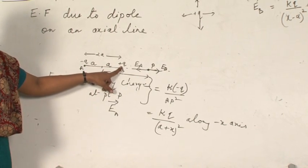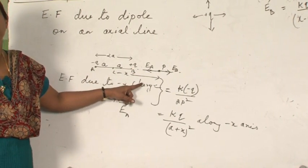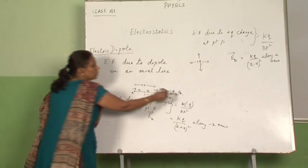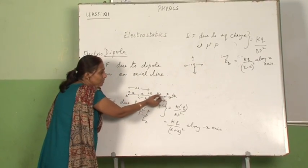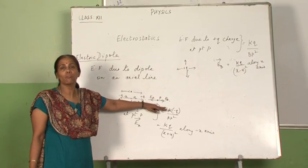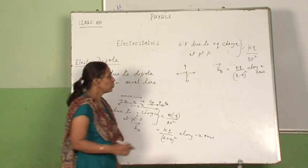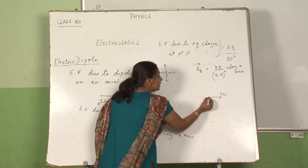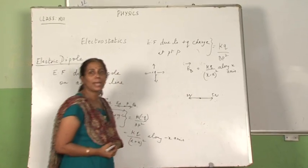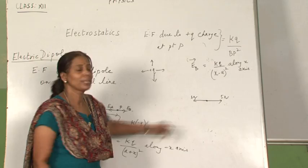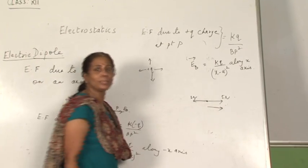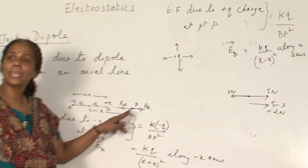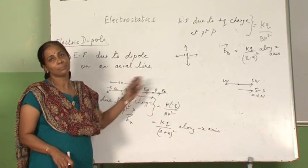We have found the electric field due to the minus q charge and the plus q charge. Now let us find the net field for the dipole system — we will just add them up. But when we add, the direction of E_A and E_B are opposite. For example, if 5 newtons is applied in one direction and 3 newtons in the opposite direction, the net force is 5 minus 3 equals 2 newtons. So we take the greater one and subtract the smaller one.